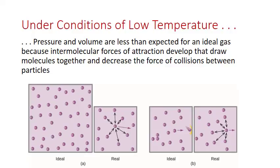And these attractions draw particles together so that the volume of a real gas at low temperature is a little smaller than what we would calculate from the ideal gas law. Those intramolecular attractions also pull back on gas particles so that they collide with the walls of the container with a little bit less force. And less force means lower pressure for a real gas compared to what we would predict from the ideal gas law.